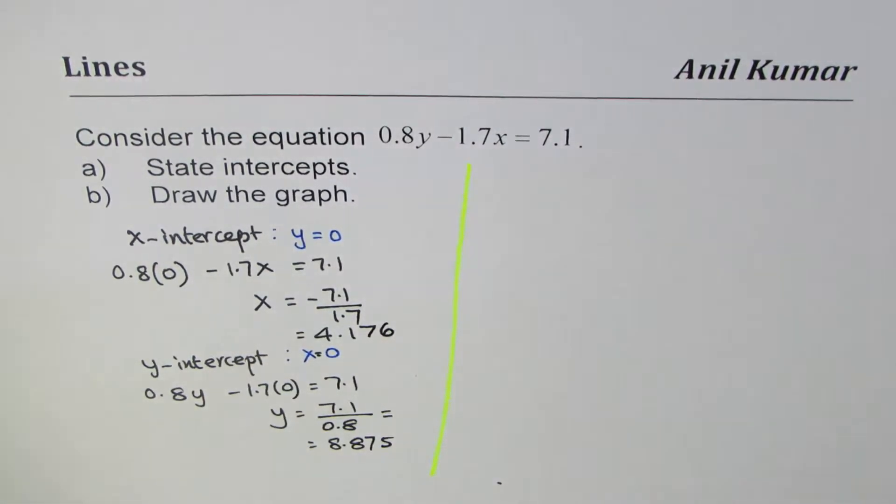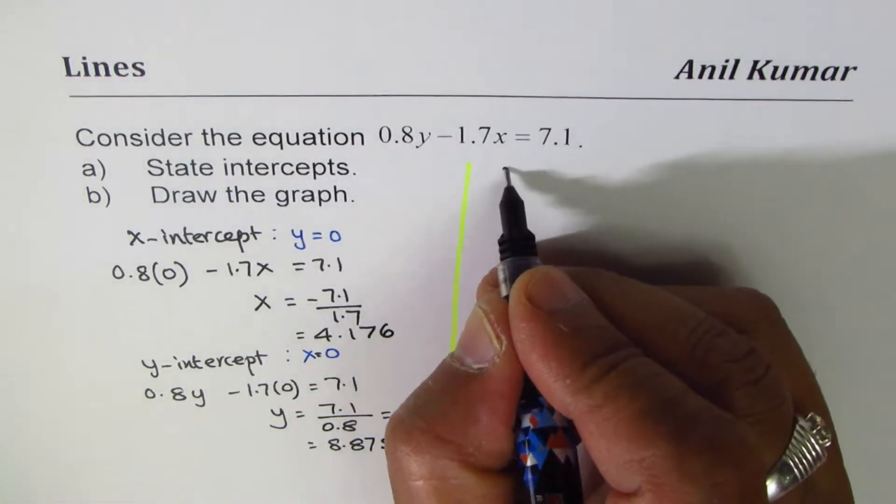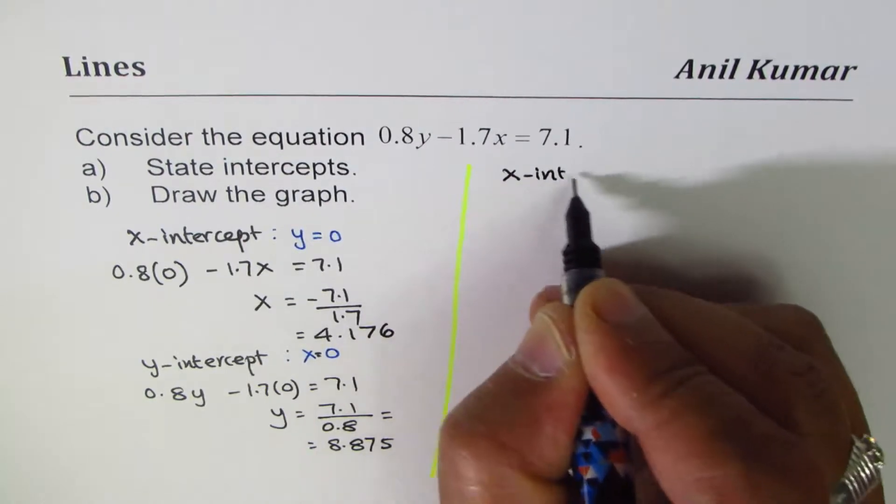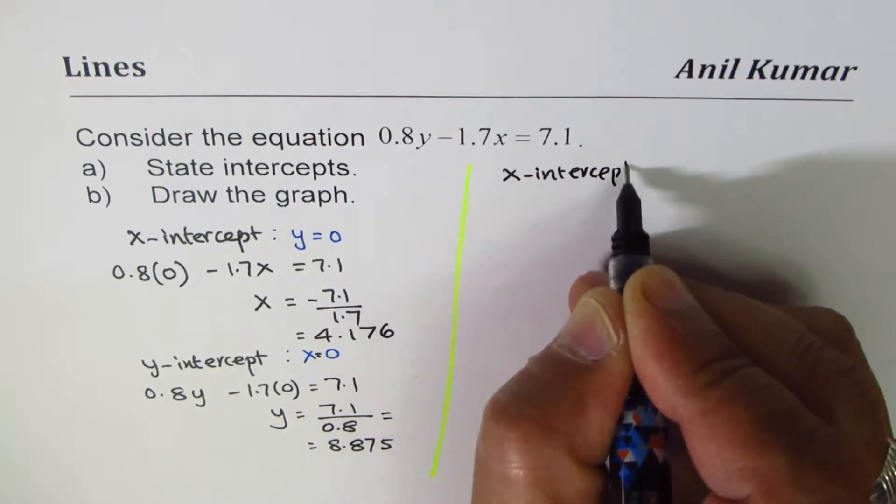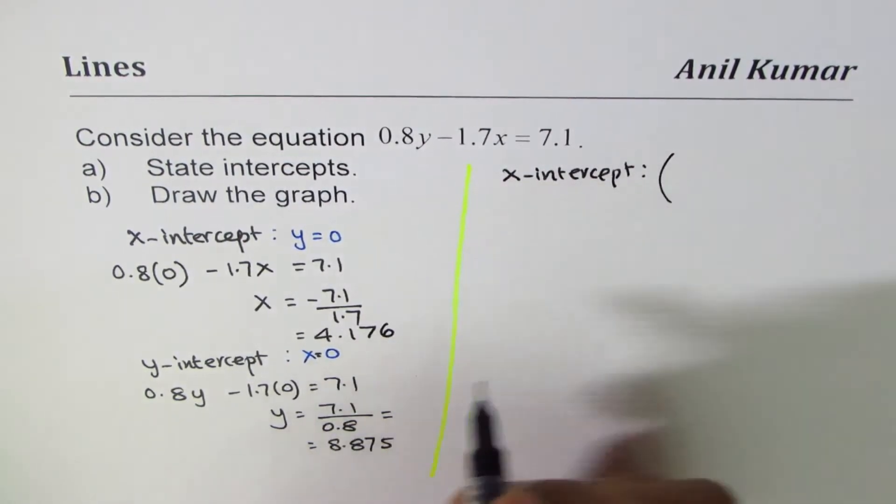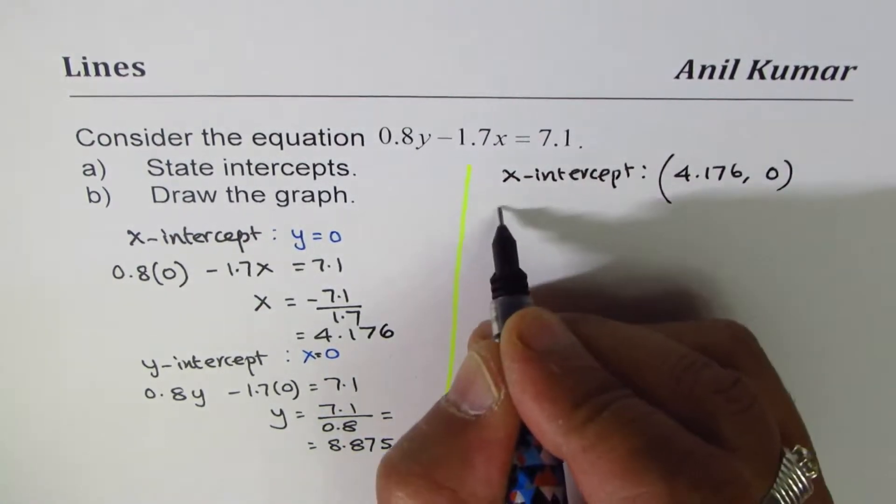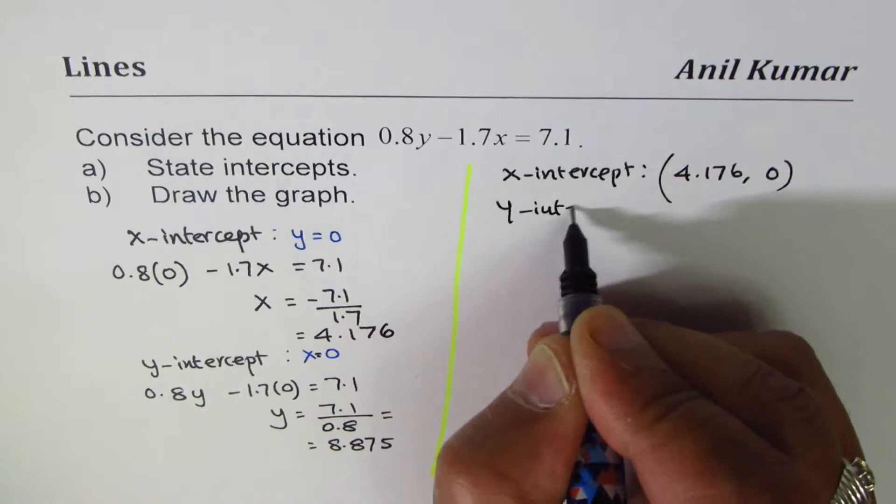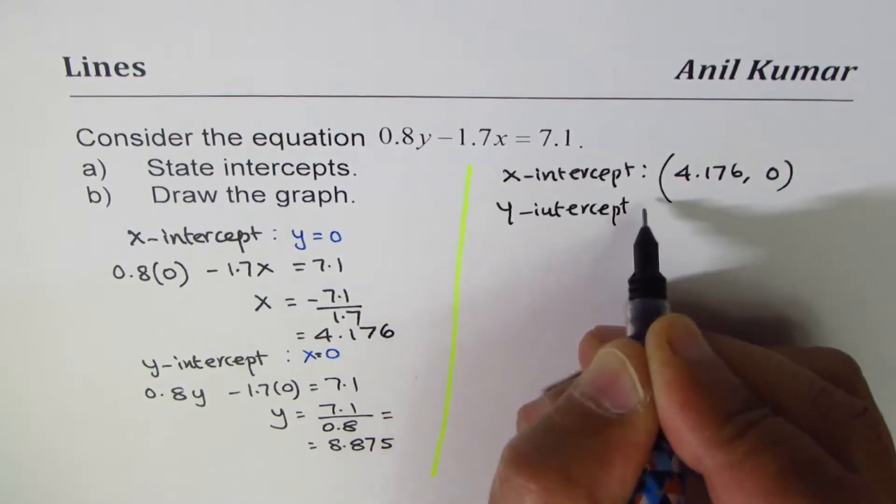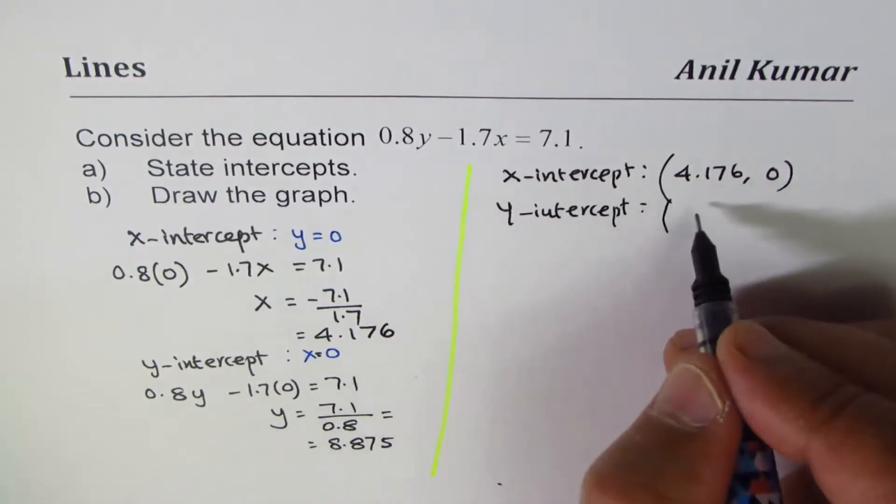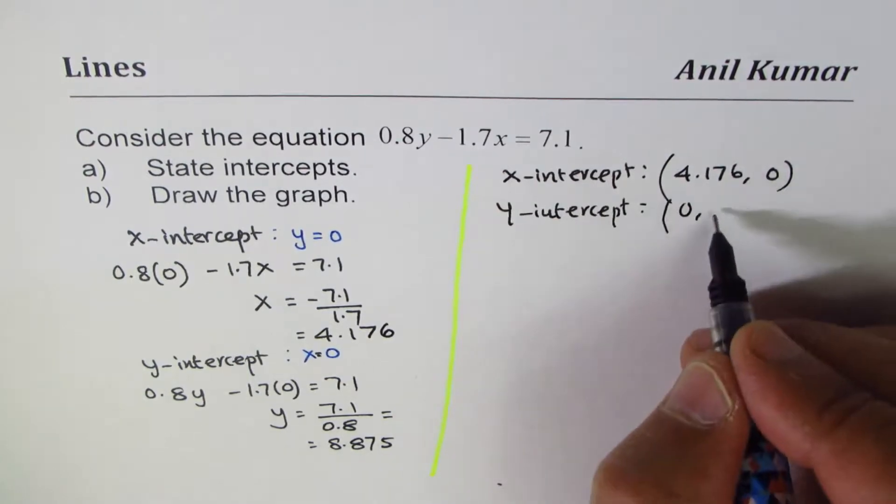So what we have here is: x-intercept is at x value of 4.176 and y equals 0. Y-intercept is at y value of 8.875 and x value of 0.